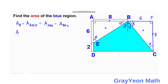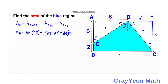Expanding: Area of blue = AF × AD minus one-half × AB × AE minus one-half × BF × BC. Here AF is the width of the rectangle and AD is its height.